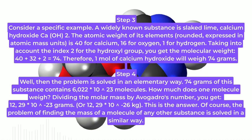Step 3: Consider a specific example. A widely known substance is slaked lime, calcium hydroxide Ca(OH)2. The atomic weight of its elements, rounded, expressed in atomic mass units, is 40 for calcium, 16 for oxygen, 1 for hydrogen. Taking into account the index 2 for the hydroxyl group, you get the molecular weight: 40 + 32 + 2 = 74. Therefore, 1 mole of calcium hydroxide will weigh 74 grams.